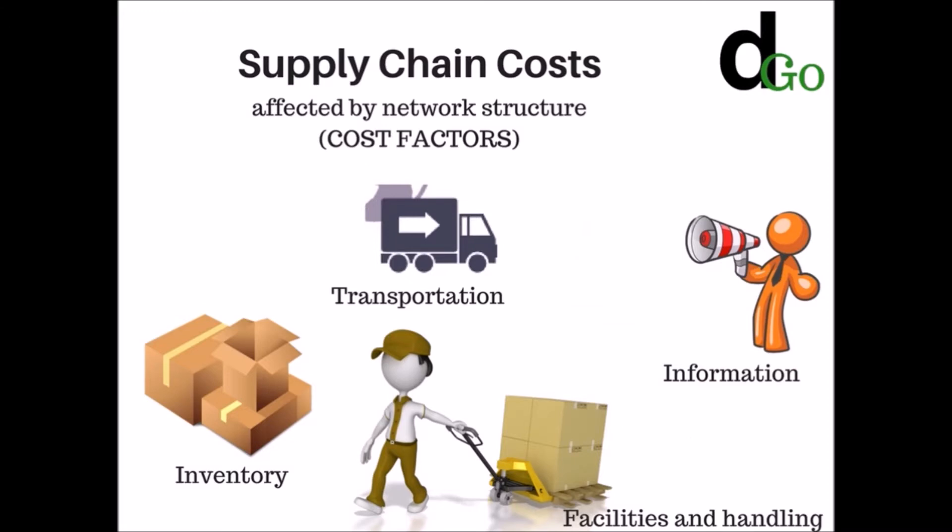Moving to the cost factors, there are four main ones: inventory, which refers to stock placement; transportation; information costs; and facilities and handling costs. These four are the primary cost factors.